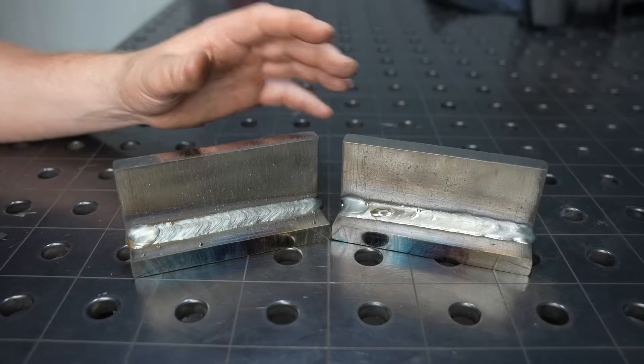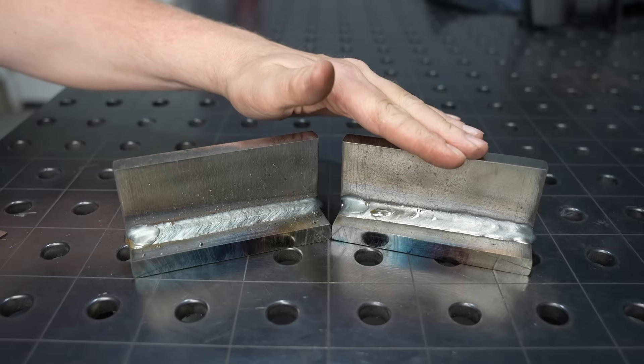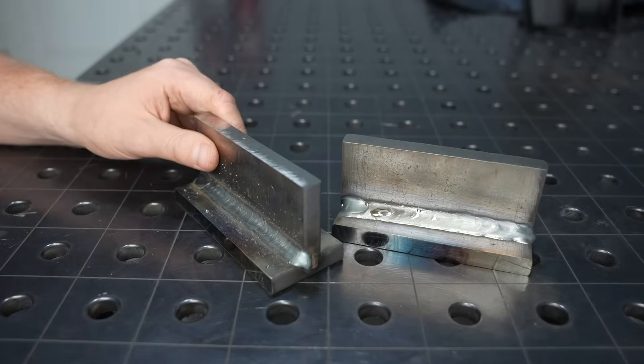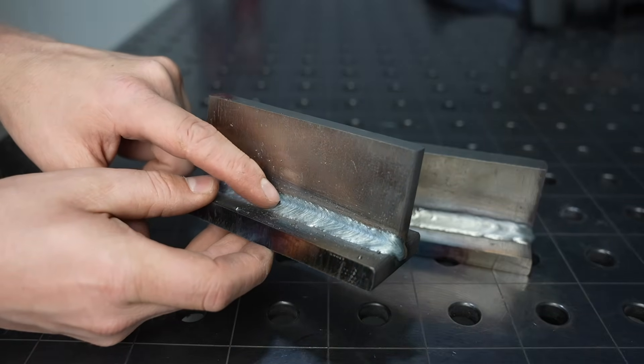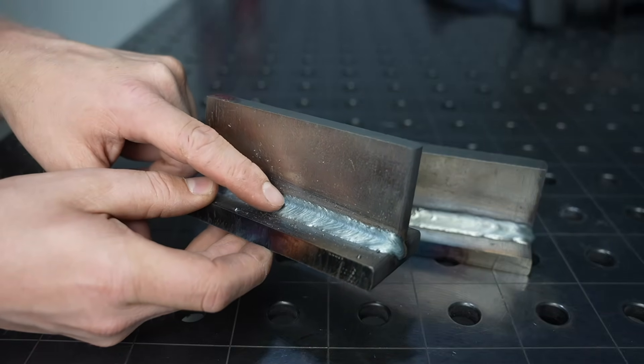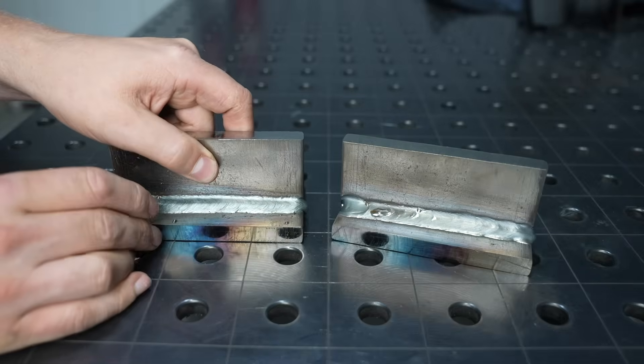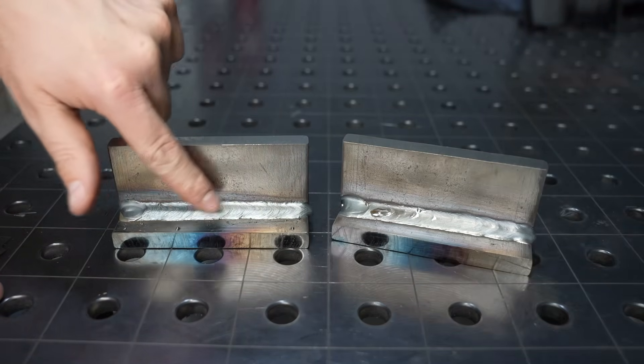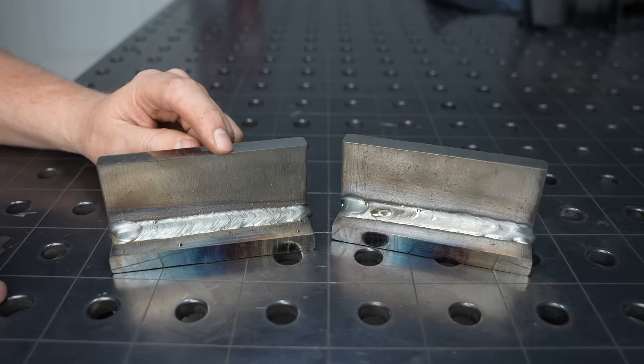Let's take a little look at what we got here. This is the short circuit MIG, this is the spray transfer. When we're looking at the profile of them, notice you have a bit more of a convex profile with short circuit—meaning the center of the weld is protruding out just a little bit more. That's typical with just about any short circuit MIG because it is an inherently colder process. Also notice right here we have a bit more spatter with the short circuit MIG, especially when you start running these higher amperages. With spray transfer, it's completely spatter-free.